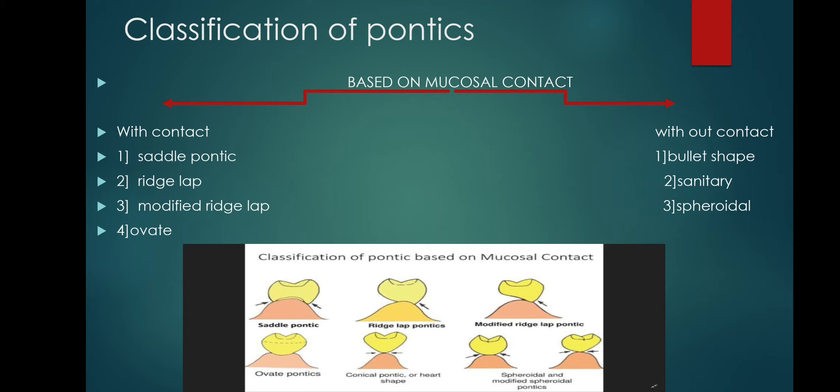The third type is the spheroidal pontic, in which the interarch space is reduced.